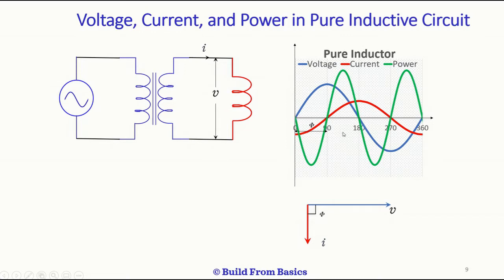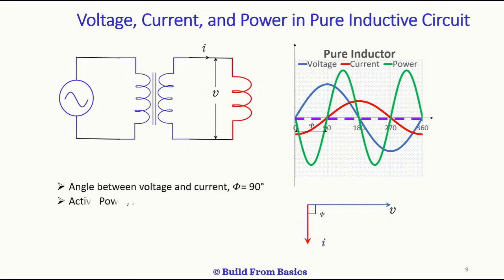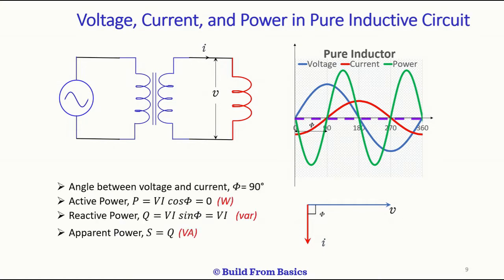The average instantaneous power is called active power, and it is zero for a pure inductor. This is shown as a dashed line in the figure.